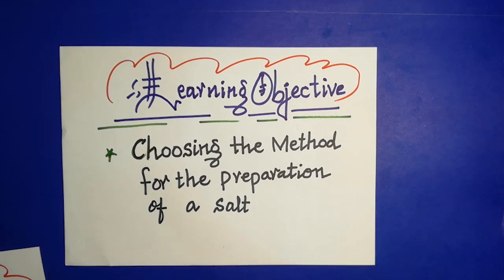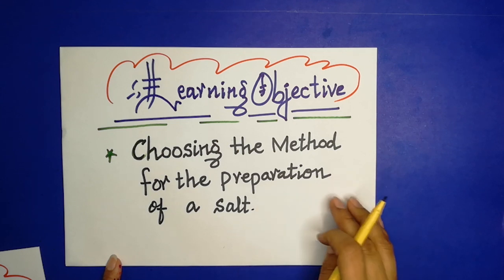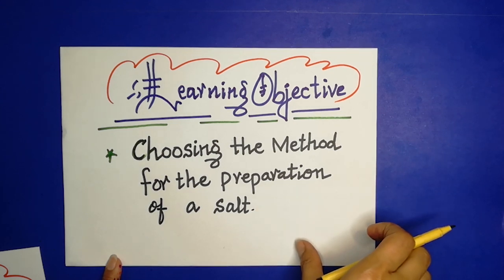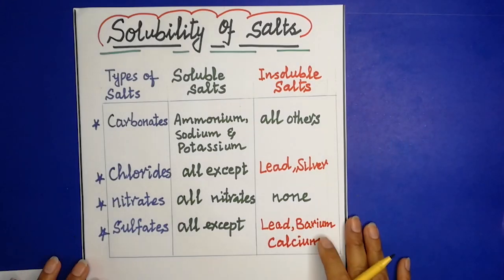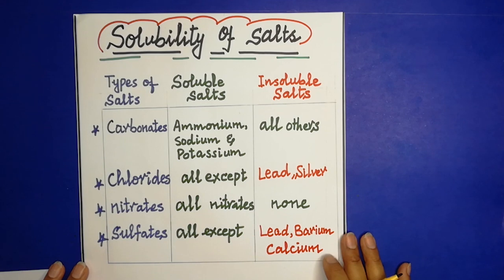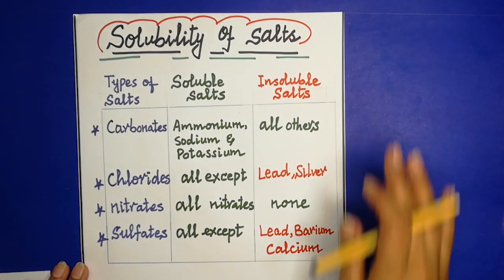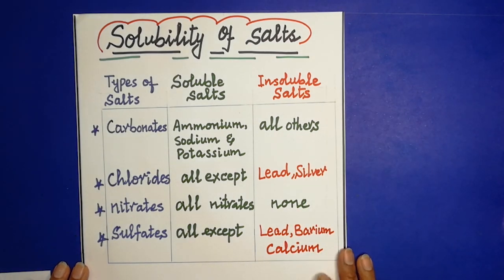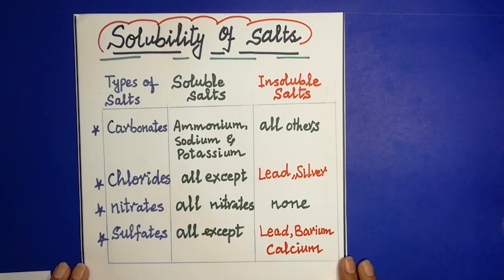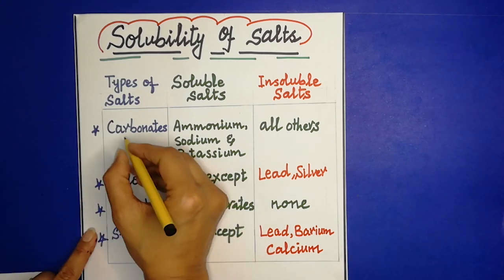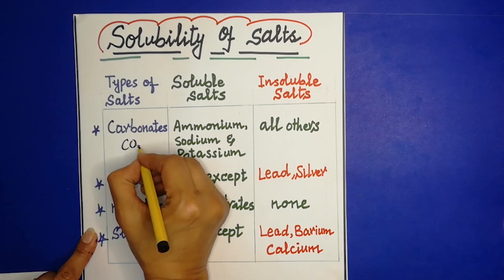This is very important — you must learn which method we should choose for the preparation of salt. In order to choose the method, the first thing you must memorize is the solubility rules of salts: which salt is soluble and which is not. For carbonates, which have the formula CO₃,